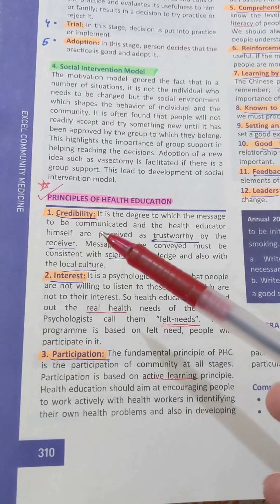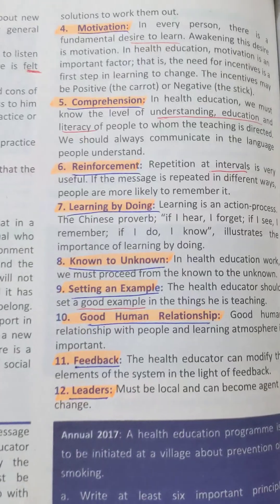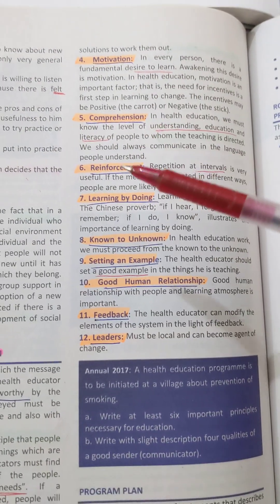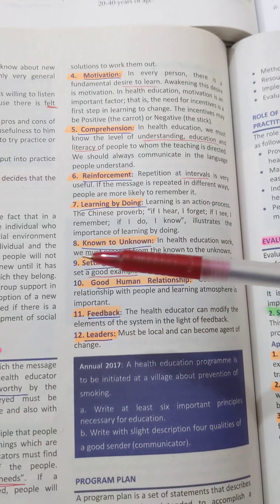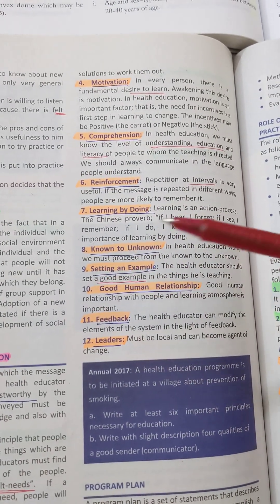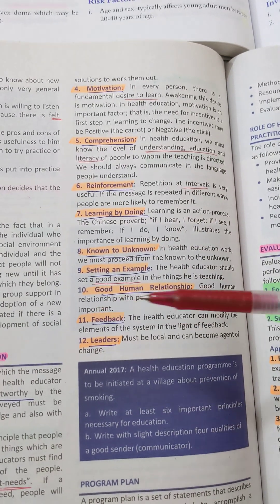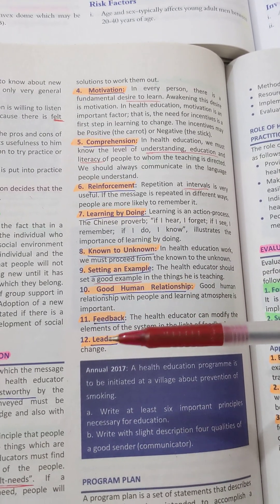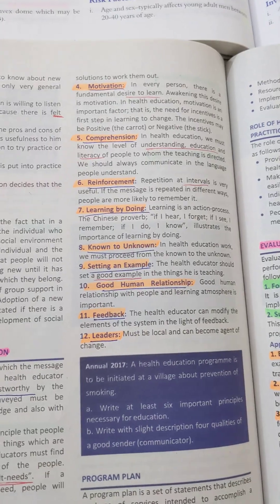Number 1 is credibility. Number 2 is trust. Number 3 is participation. Number 4 is motivation. Number 5 is comprehension. Number 6 is reinforcement. Number 7 is learning by doing. Number 8 is known to unknown. Number 9 is setting an example. Number 10 is good human relationship. Number 11 is feedback. And number 12 is leaders. So there are 12 principles of health education.